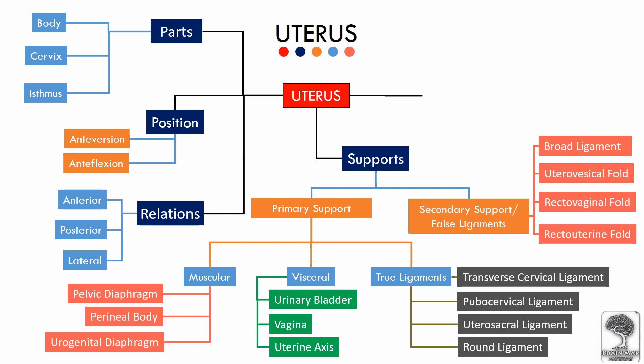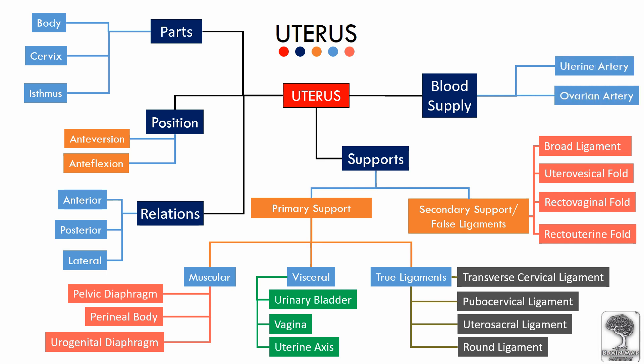Last, we will see the blood supply to the uterus. The branch of the anterior division of the internal iliac artery called the uterine artery and the direct branch from the abdominal aorta, the ovarian artery, anastomose at the lateral wall of the uterus.